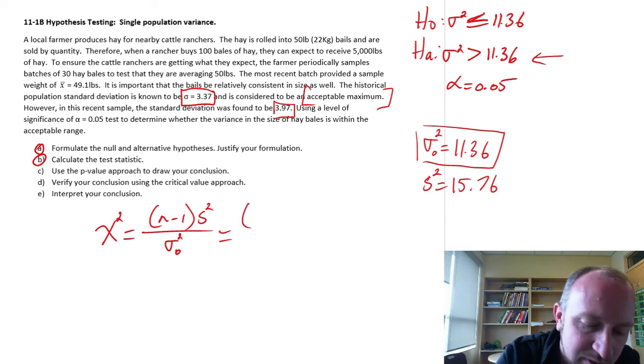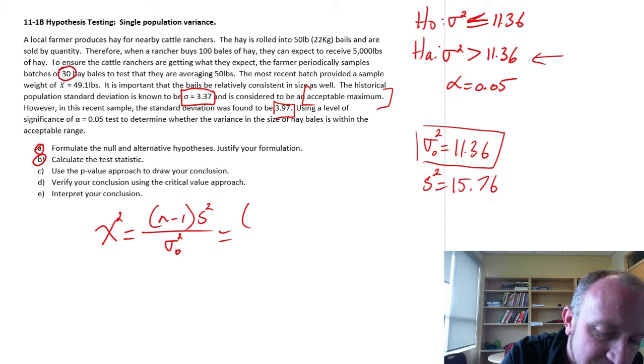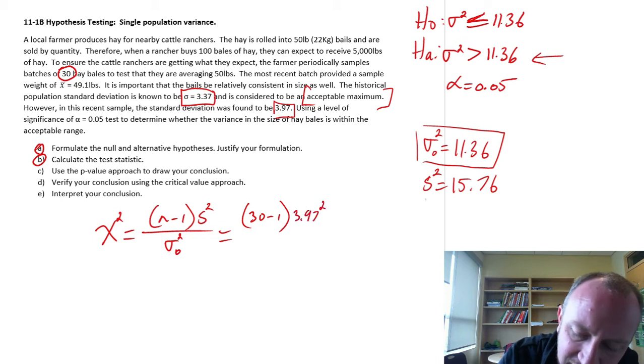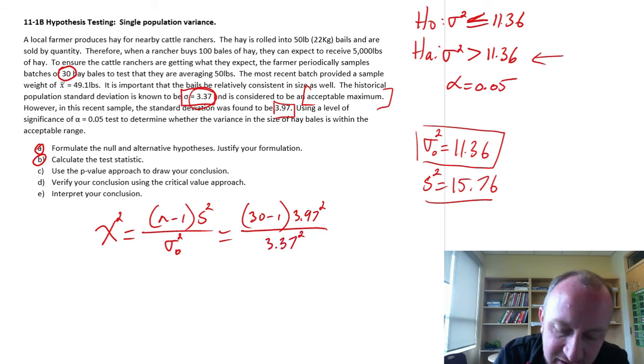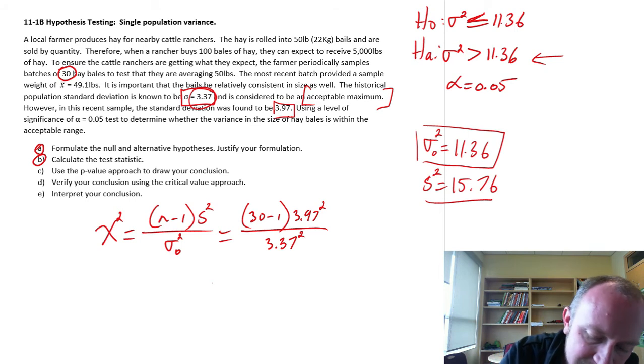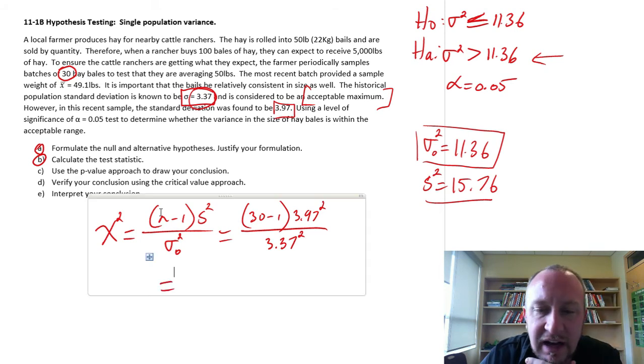And so it's just a matter of plugging in our numbers. Here I've got 30 is my sample size, 30 minus 1. This is 3.97 squared, which I already know what that's going to be, divided by, here's that hypothesized value, 3.37 squared. 3.37 squared is our variance. And now we can just plug those values into our calculator and see what we get.